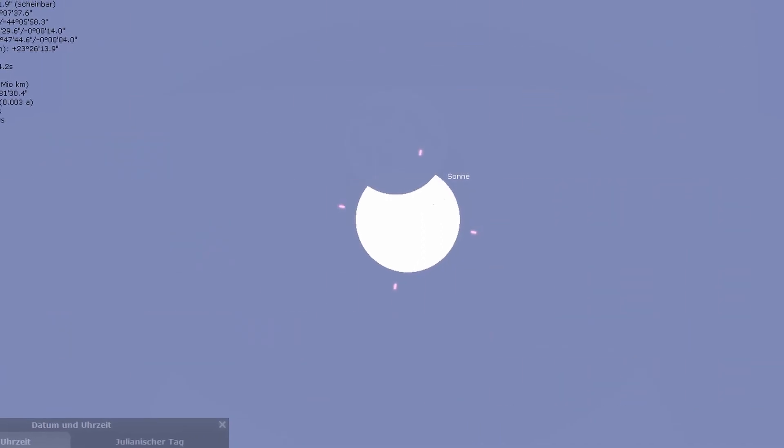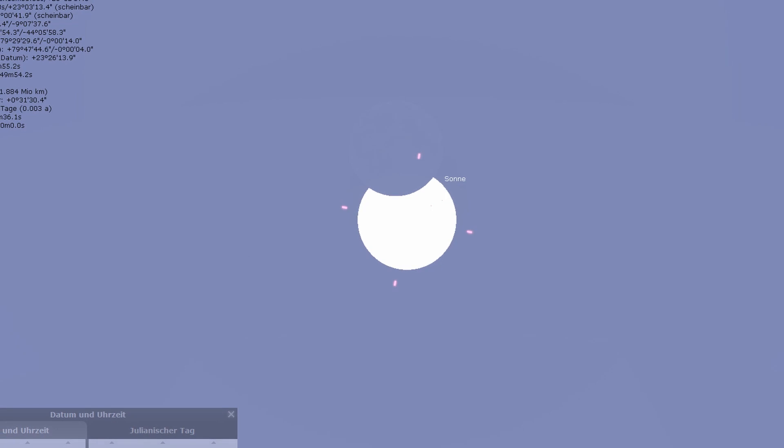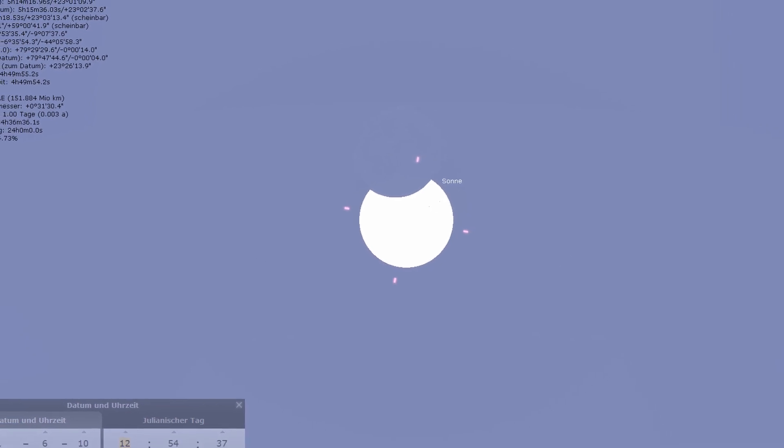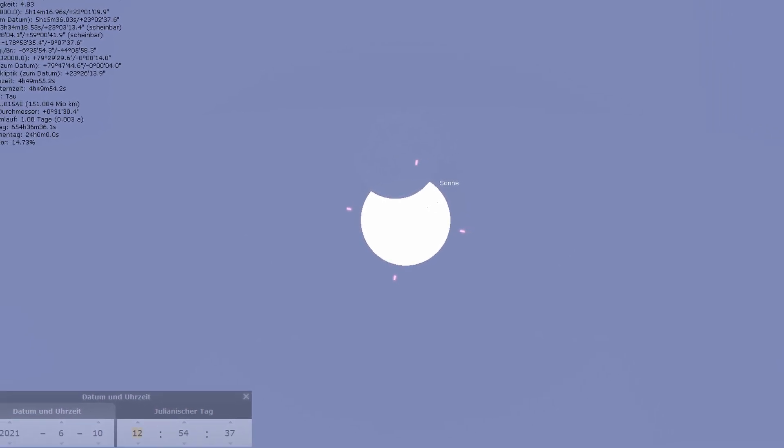Here in the north of Germany, the Moon occupies about 20% of the Sun at noon. That's not as cool as a ring solar eclipse, but you take what you can get.